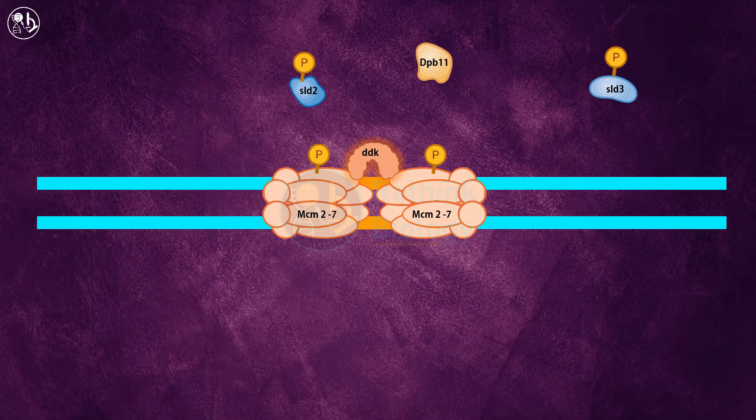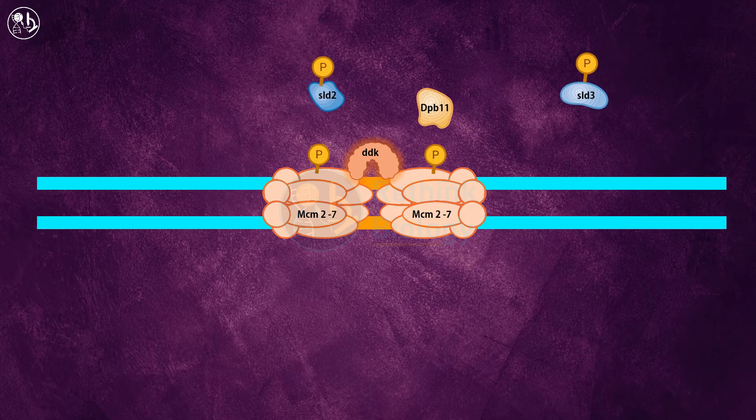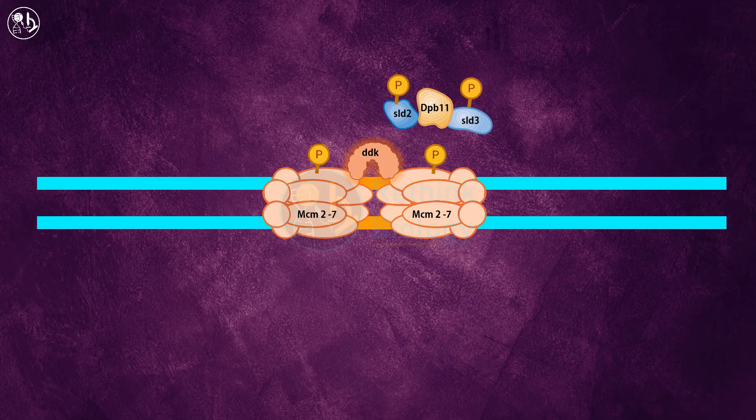Phosphorylated SLD2 and SLD3 then bind to the DPB11, and they all together attach to the origin complex.